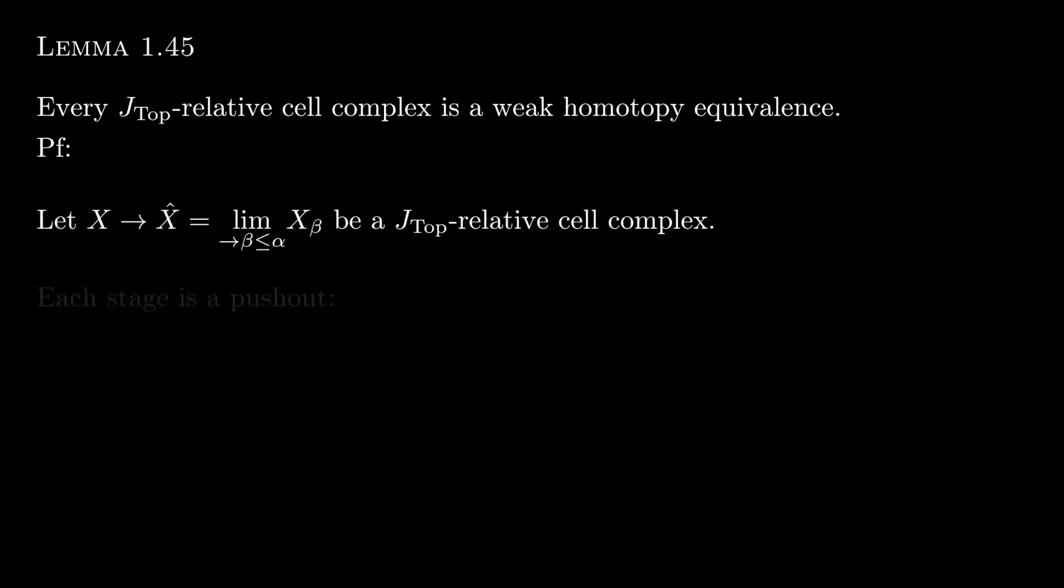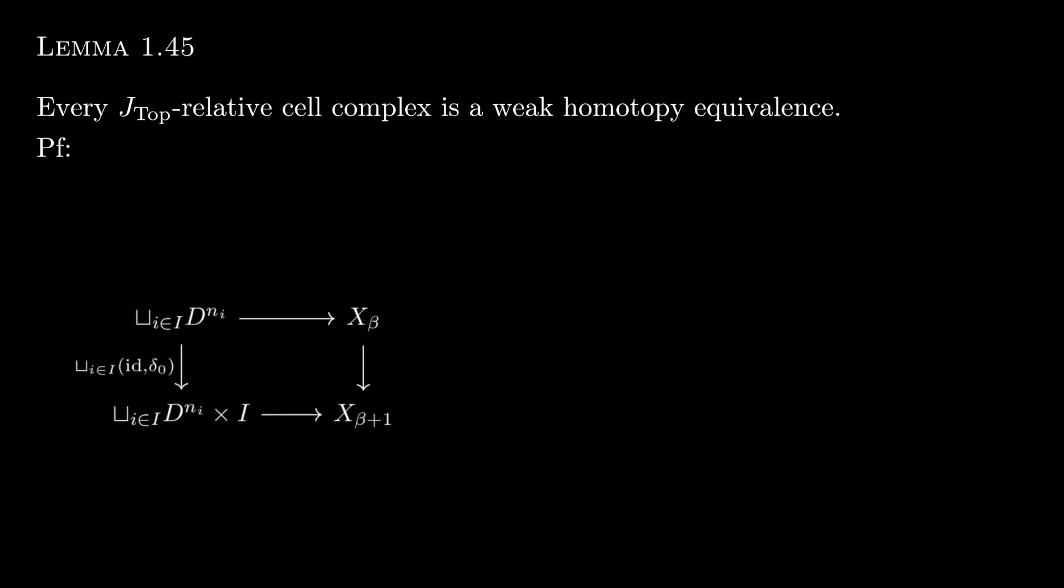So let X to X-hat be a J-top relative cell complex. Again, we can visualize each stage as a push-out like this diagram, but consider that the projection and that the inclusion are inverses of each other. So if we stack these two, we get that the long vertical map on the right hand side is just the identity. So the two horizontal maps on the right hand side are equal and that makes the right most vertical map also the identity.